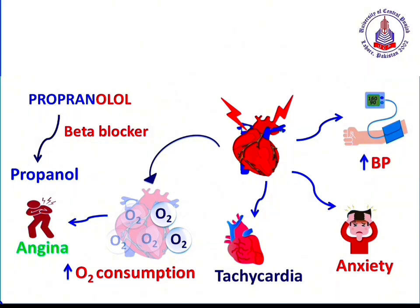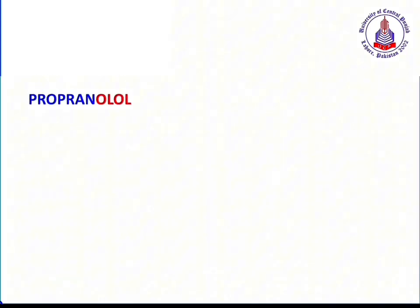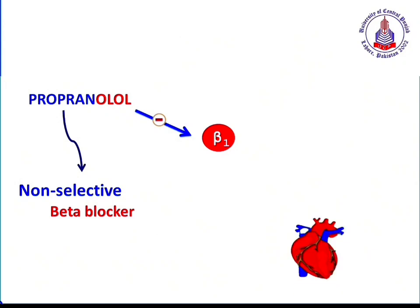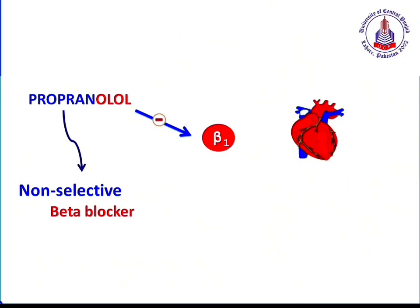For all these cardiovascular disorders, propranolol can be used. Propranolol is a non-selective beta blocker, meaning it can block the beta-1 receptors located on the heart, resulting in decreased cardiac work. That's why the drug is indicated for various cardiovascular disorders such as angina, tachycardia, hypertension, and myocardial infarction.